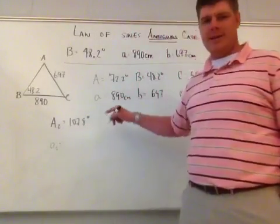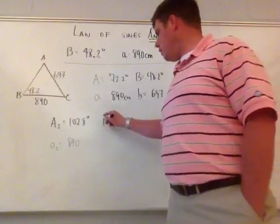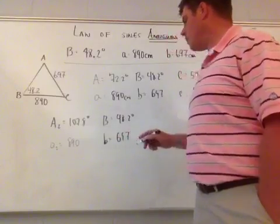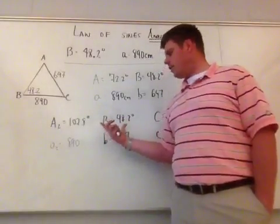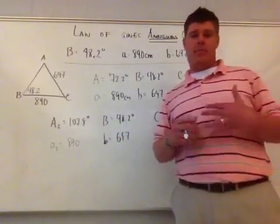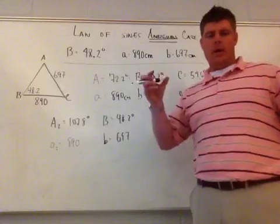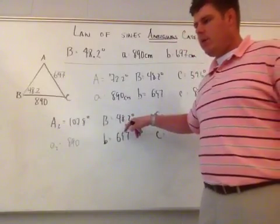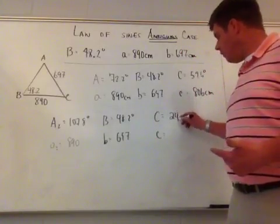Can I make another triangle with A2 equal to 107.8 degrees? I take 107.8 plus 48.2 and subtract from 180. If the result is positive, then angle C exists and another triangle can be formed. If it exceeds 180, there is no second triangle. In this case, 107.8 plus 48.2 equals 156, and 180 minus 156 gives angle C2 equals 24.0 degrees — a positive value.